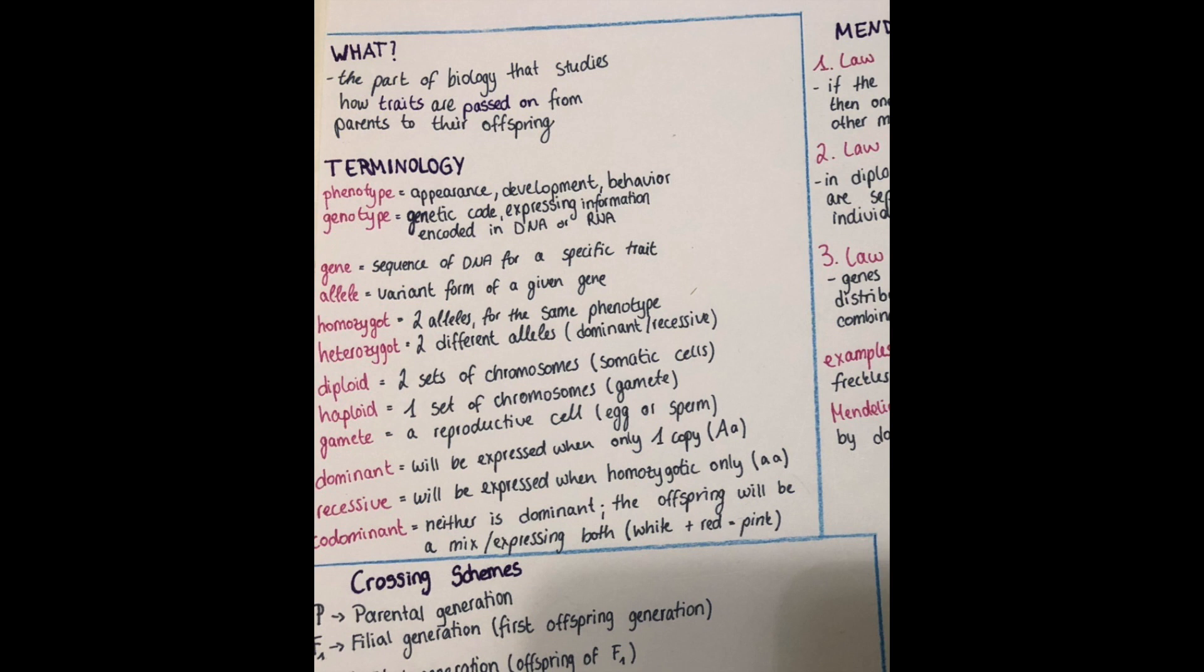Then what you also will encounter is the word diploid or haploid. Diploid meaning that there are two sets of chromosomes. And diploid cells are the somatic cells, so the cells in the body and not in the gametes. Because a gamete is a reproductive cell, so an egg cell or sperm cell, and those are haploid, meaning they only have one set of chromosomes. And then when the two gametes come together they will form a diploid set of chromosomes.